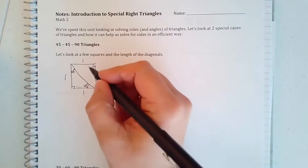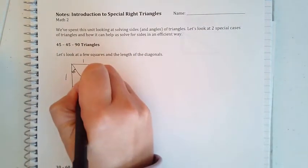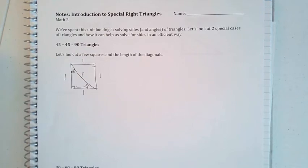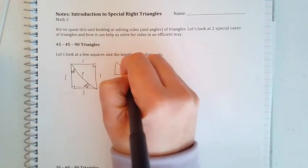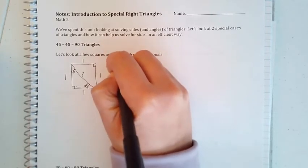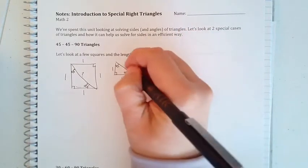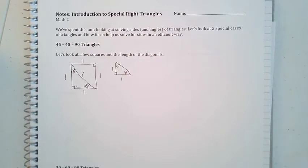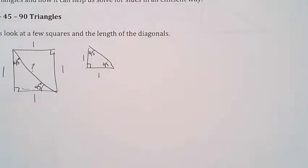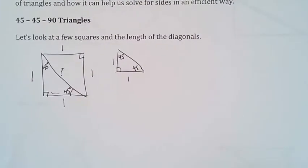Now if we ask, what is the measure of this diagonal? I'd look at the triangle within. I have two sides. While I can use trig to find this side, it's much quicker to use Pythagorean theorem.